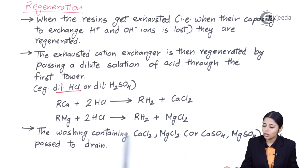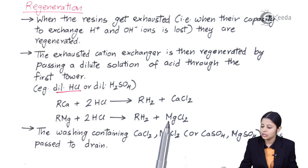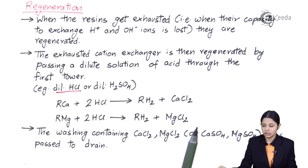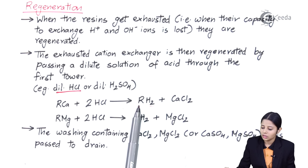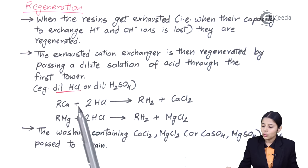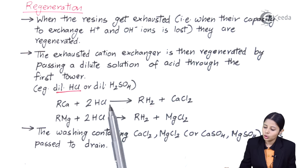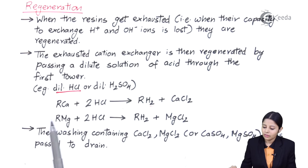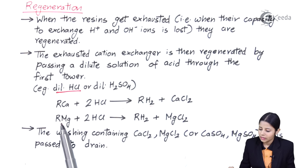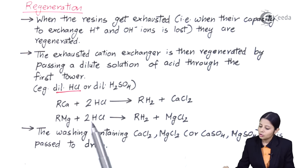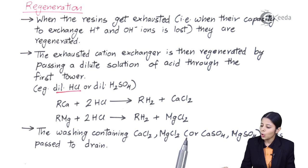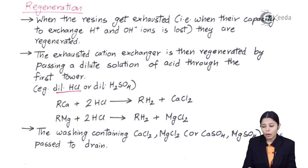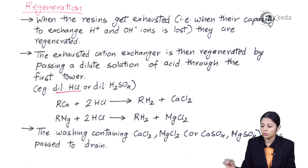Similarly, RMg + 2HCl → RH₂ + MgCl₂. Checking the balance of RCa + 2HCl → RH₂ + CaCl₂: 1R each side, 1 Ca each side, 2H and 2Cl on each side — balanced. For RMg + 2HCl → RH₂ + MgCl₂: 1R each side, 1 Mg each side, 2H and 2Cl on each side — balanced. The washings containing CaCl₂, MgCl₂, CaSO₄, MgSO₄, etc. are passed to drain, as they are byproducts. Only the regenerated RH₂ resin is needed.